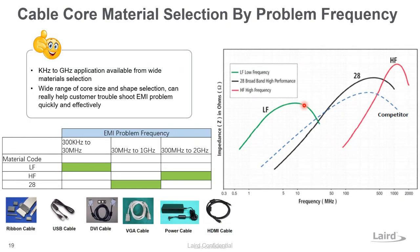For cable core selection, Laird offers a very wide range of material selection covering low frequency, broadband — with the famous 28 broadband material — and high-frequency solutions, covering low frequency up to about 2 to 3 GHz for common mode noise suppression.